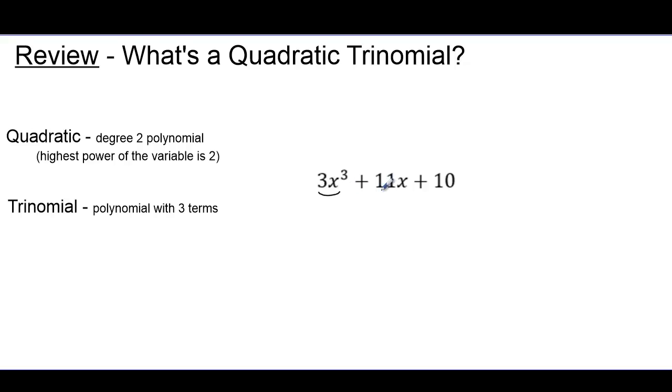This example has three terms, so it's a trinomial, but the highest power is 3, and therefore it's not a quadratic. And in this last example, the variable r is raised to the highest power of 2, so this is a quadratic expression, but it's not a trinomial because it only has two terms. We call that a binomial.